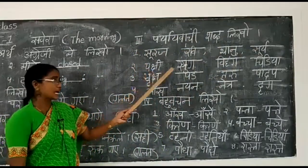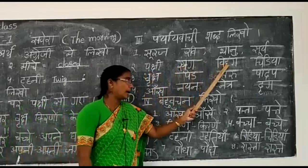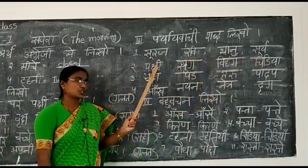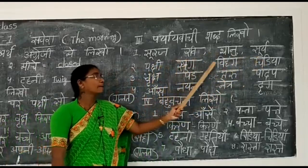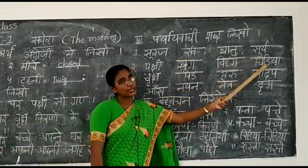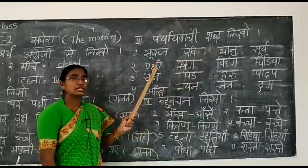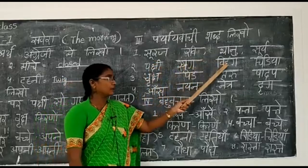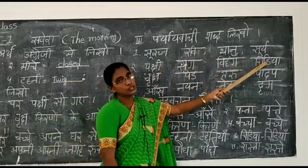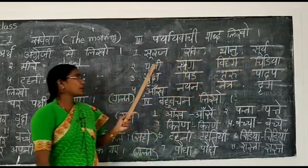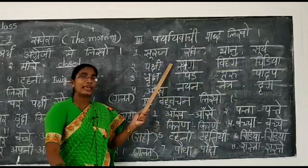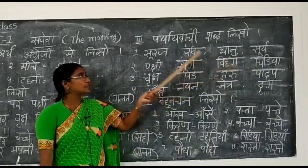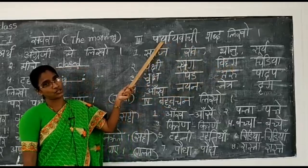Second word: 'Pakshi'. Its synonyms are 'Khag', 'Vihang', 'Chidiyan'. Pakshi means bird, khag also means bird, vihang also means bird, chidiyan also means bird. These are all synonyms - words with the same meaning in the same language, which in Hindi we call pariyai vachi shabd.